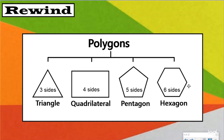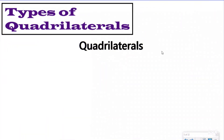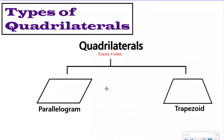Let's zoom in now on quadrilaterals. To be a quadrilateral, you have to be a polygon with exactly four sides and four vertices. Just like there was more than one polygon, there's more than one type of quadrilateral. The two main ones are the parallelogram and the trapezoid. Both have the attributes of four sides and four vertices, but they also have something very specific that makes one a parallelogram and the other a trapezoid.